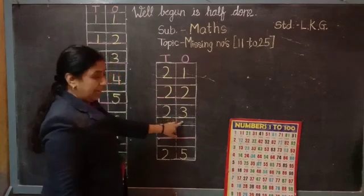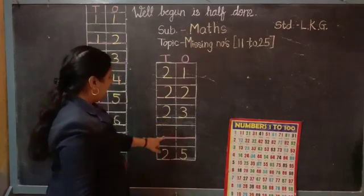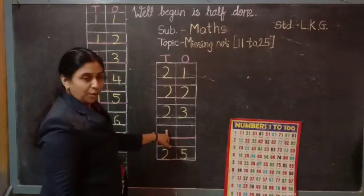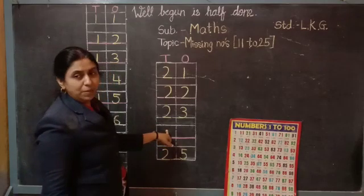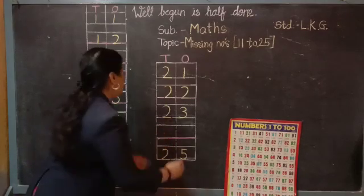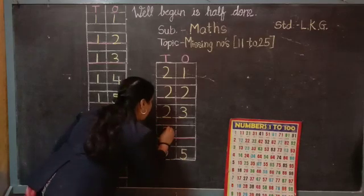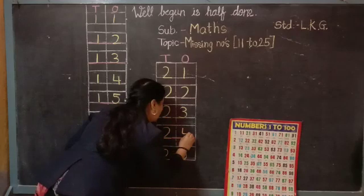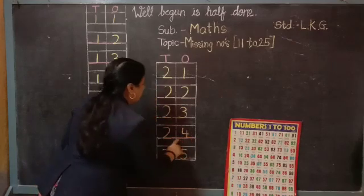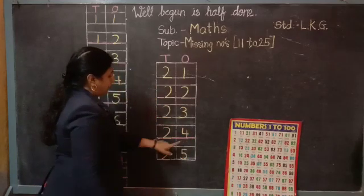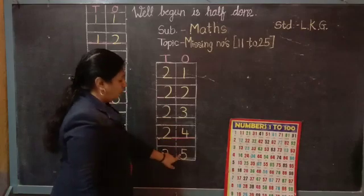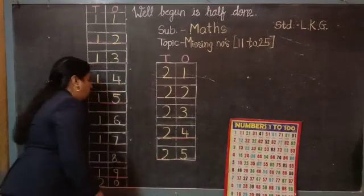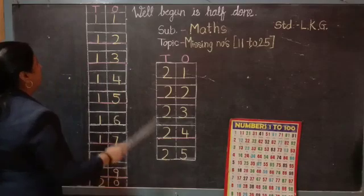2-3, 23. After 23, which number is missing here? Who will tell me? Very good. 2-4, 24. Number 24 is missing here. After 24, 2-5, 25.